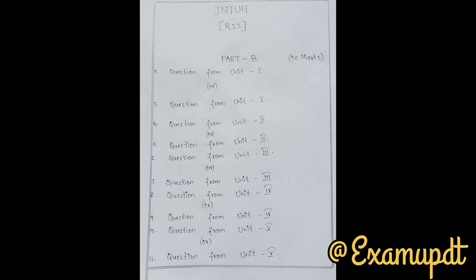Part B for R22 consists of long questions worth 10 marks each. As shown in the image, you get a choice for every unit — you can answer question 2 or question 3 but not both. If you answer both, only one will be awarded marks. You may also get sub-questions like 2a, 2b, 3a, 3b, and you must answer one complete set — either 2a and 2b, or 3a and 3b, not 2a and 3b, as that would result in only half marks.